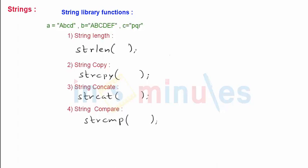Assume A is a string with value ABCD, B with value ABCDEF and C with PQR. Now let's see some four functions over here.